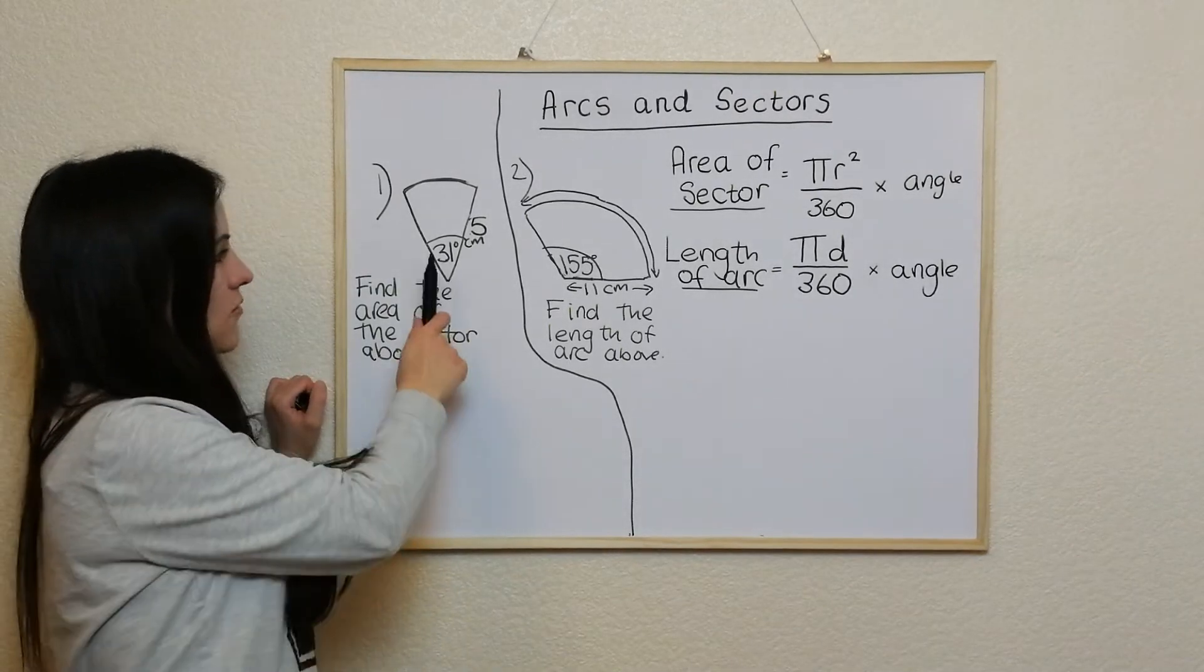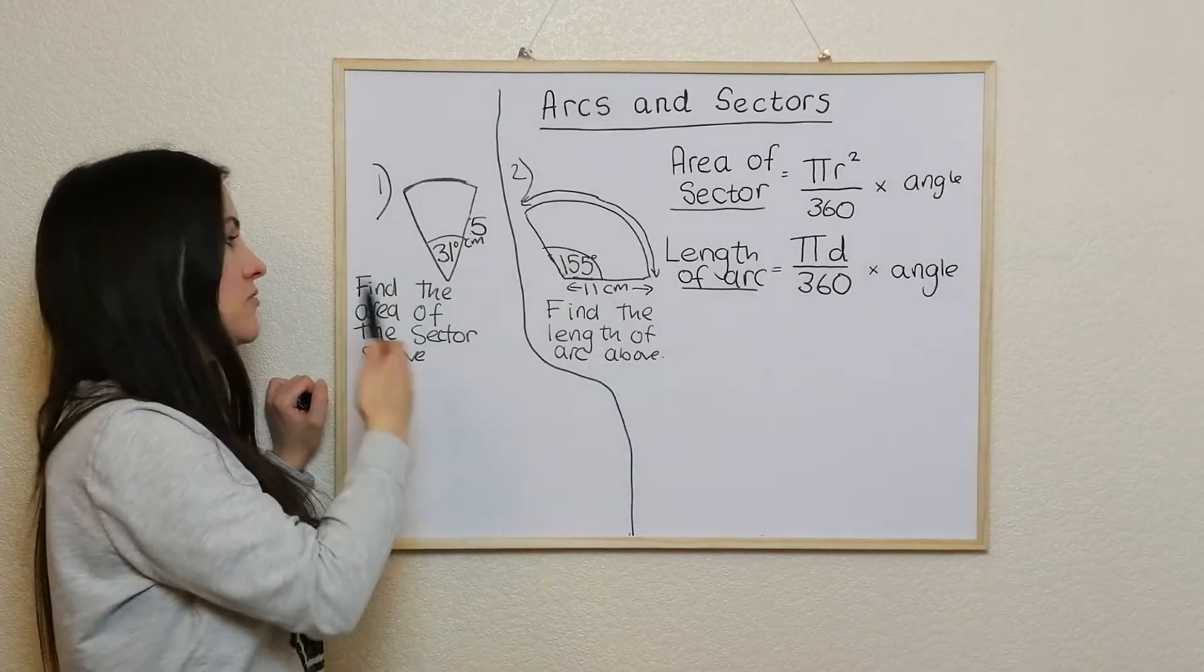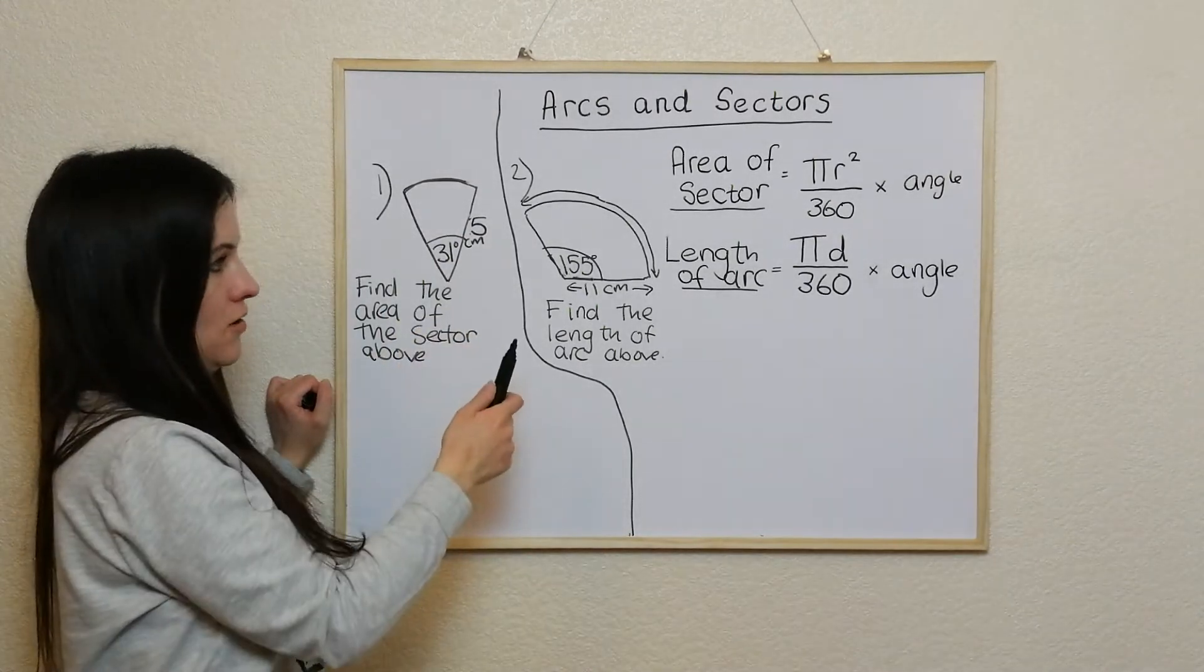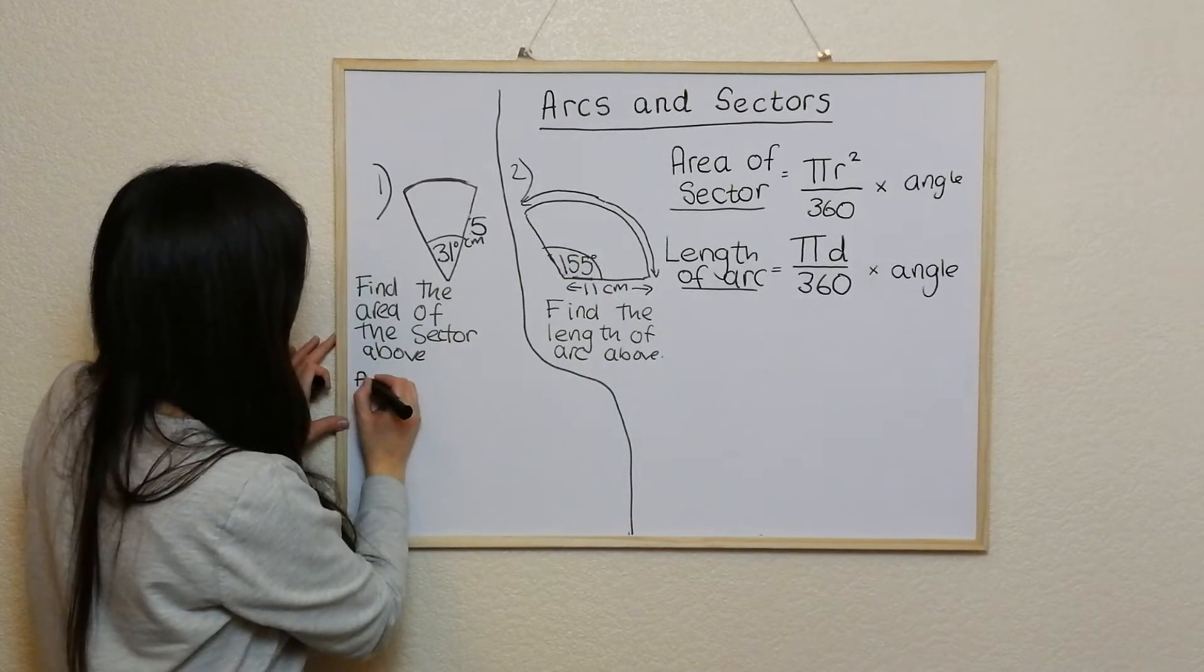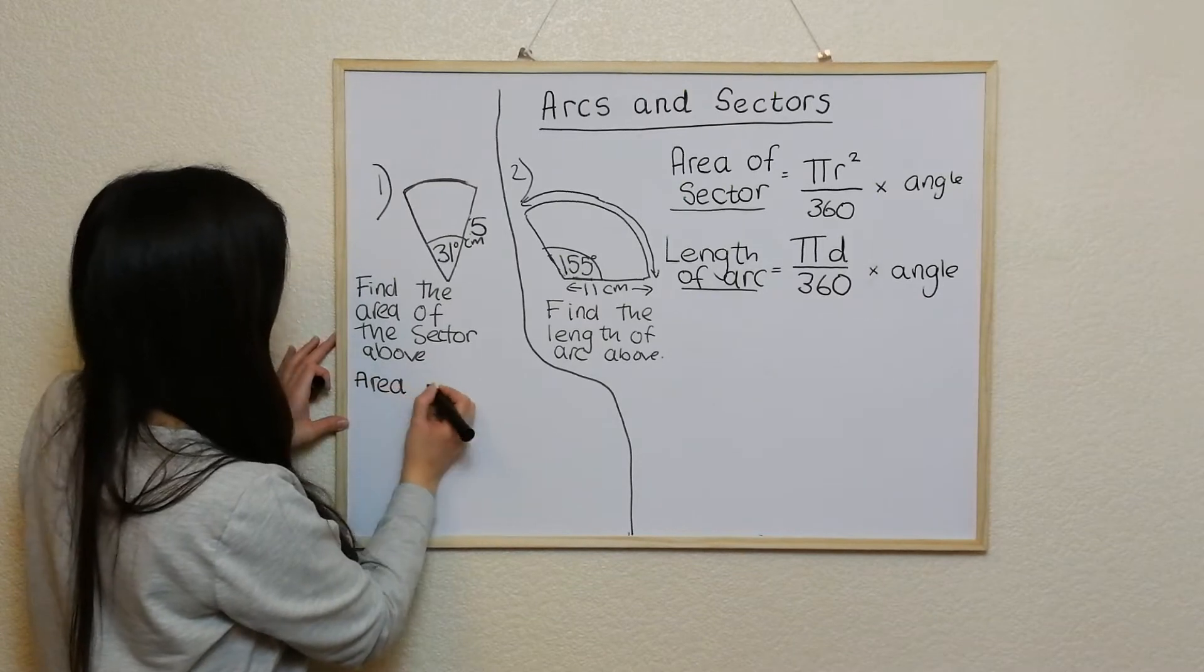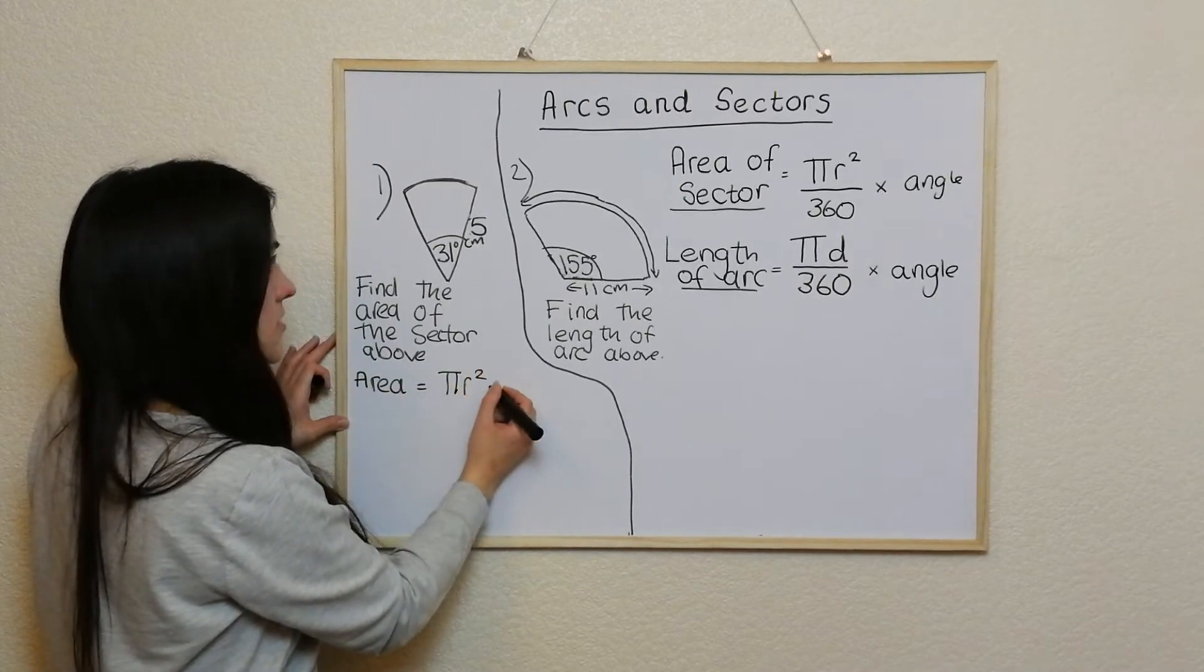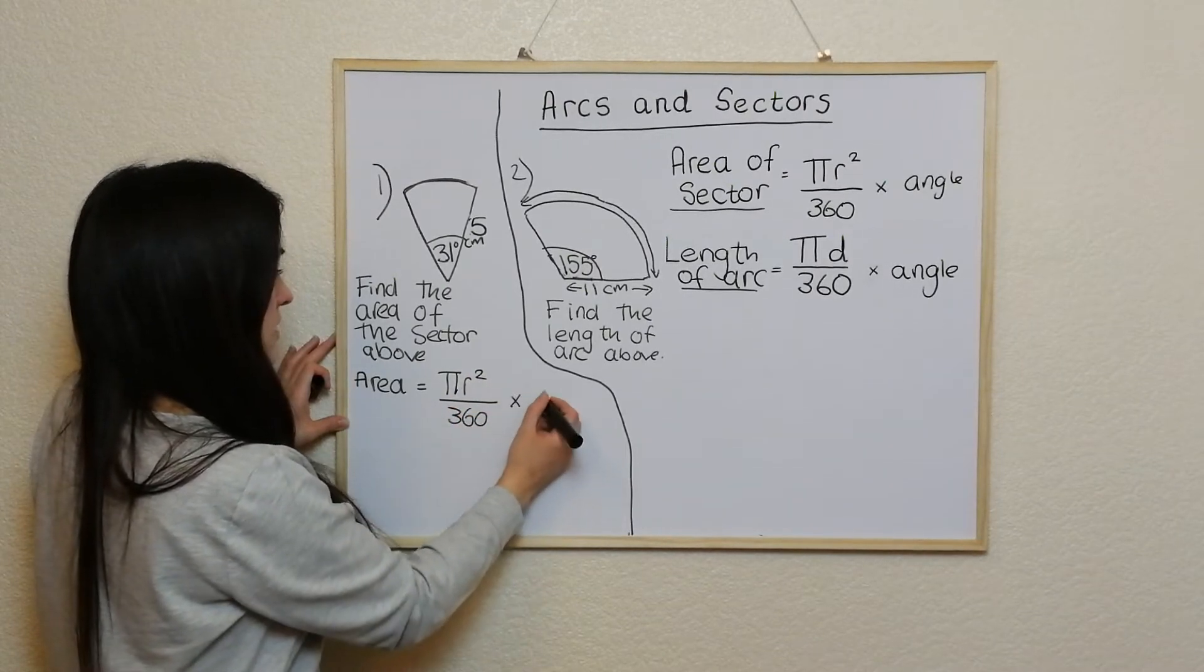So to get the area of the sector above, we imagine we're getting the area of the whole circle divided by 360 to get the area of one degree and then times it by the angle. So what I'm going to do is I'm just going to write out that formula up there. So area equals pi r squared divided by 360 times angle.